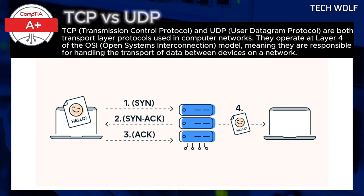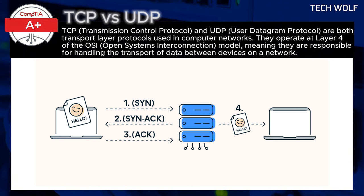TCP, or Transmission Control Protocol, is known as a connection-oriented protocol. This means that before two devices can exchange data, they first must establish a connection. The process of setting up this connection is done through something called the three-way handshake.